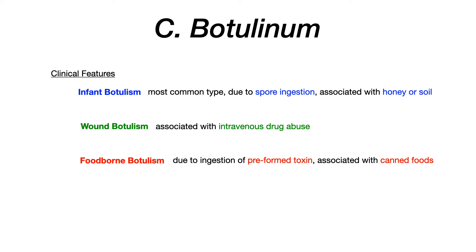Foodborne botulism is due to preformed toxin that already exists in contaminated food — the patient swallows the preformed toxin directly. It is not the spore, it is the preformed toxin. Usually spores germinate and produce the bacteria which produces the toxin, but in foodborne botulism the preformed toxin already exists inside the food. This is classically associated with poorly pasteurized canned foods. So to summarize the buzzwords: honey points to infant, IV drug abuse points to wound, and canned foods points to foodborne botulism.